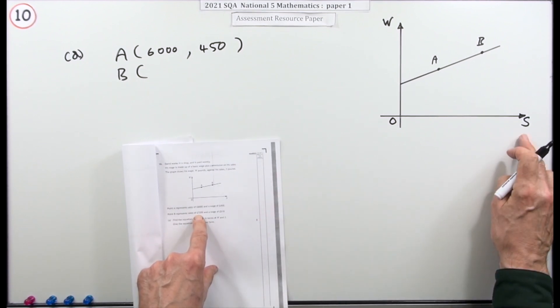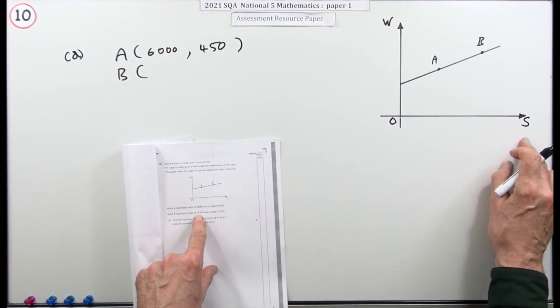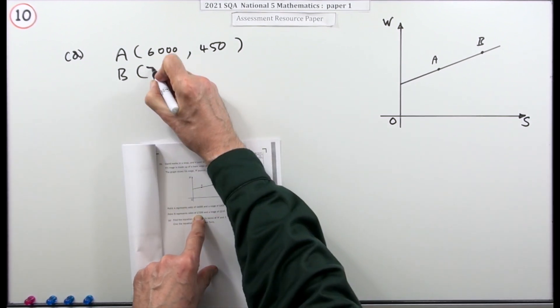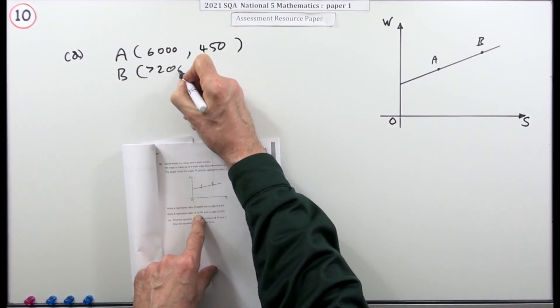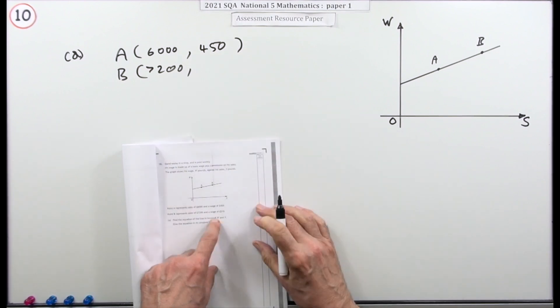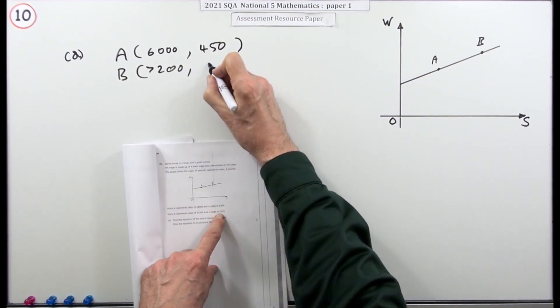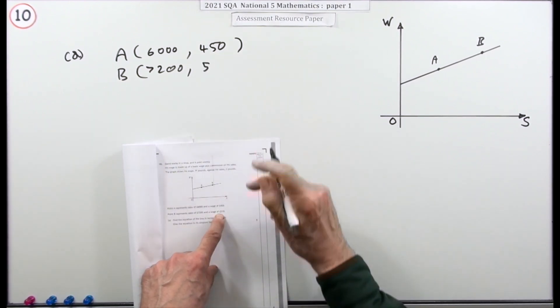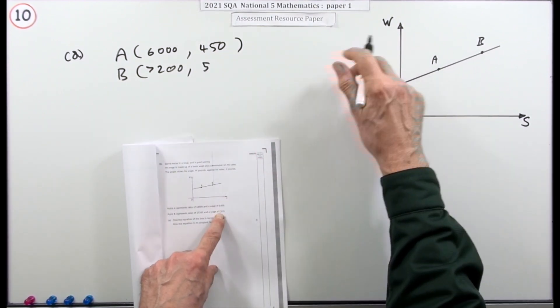Point B: sales again — that's like the x, that's 7,200 — and 510 is the wage, that's the y.